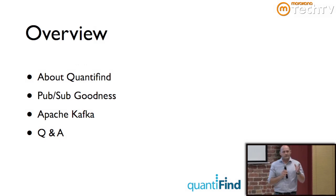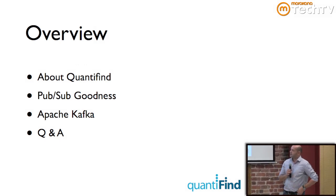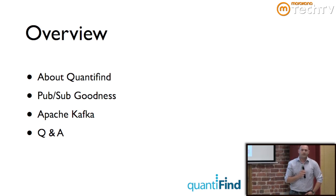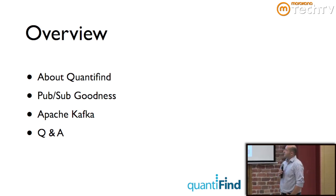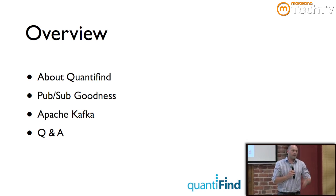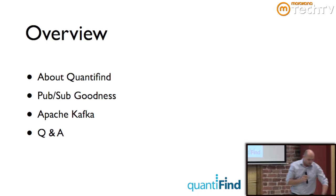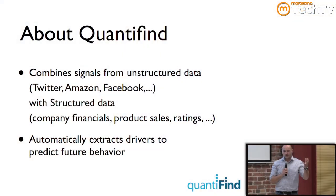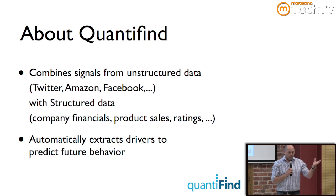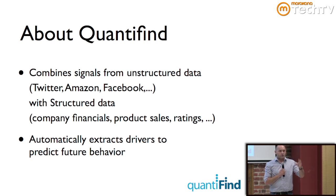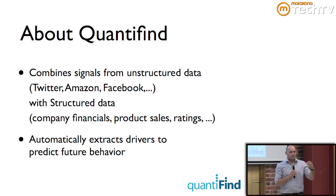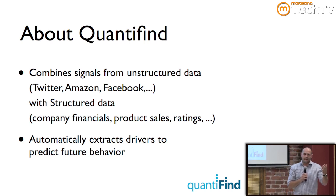The idea is basically not to go into super detail. What we do is essentially we take unstructured data — it could be tweets, it could be Amazon product reviews, it could be Facebook public pages — and then we correlate that with structured data. So it could be financials, it could be product sales data, it could be ratings.